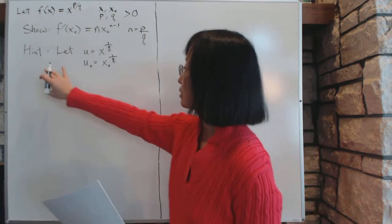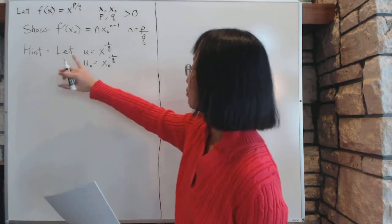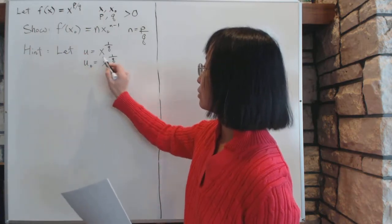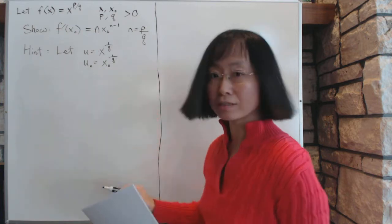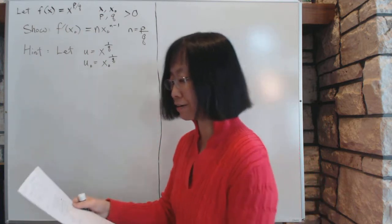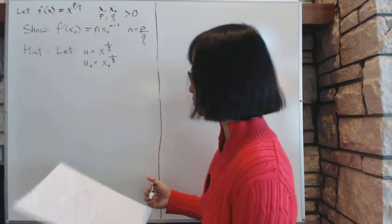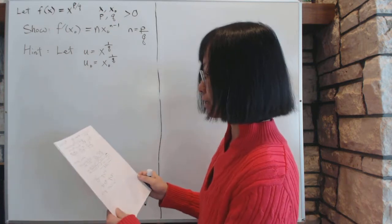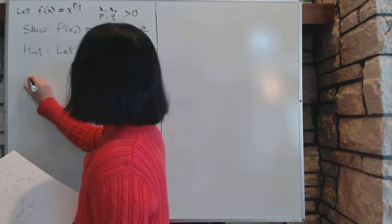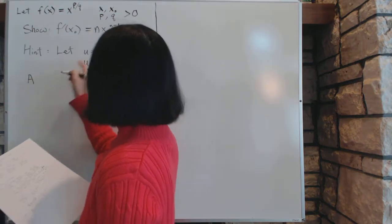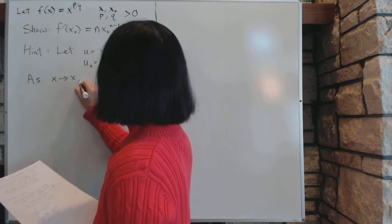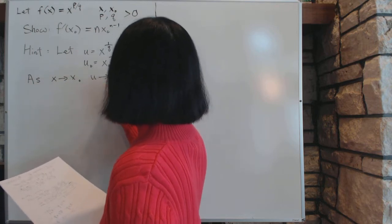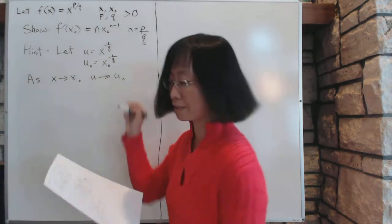So here's a hint for this problem: you will replace x with u, x^(1/q) with u, and x0 to the power of 1 over q with u0. The purpose of this is just so that everything looks a little neater and cleaner. So let's proceed with the hint. And remember that as x approaches x0, u has to approach u0 from the definition.